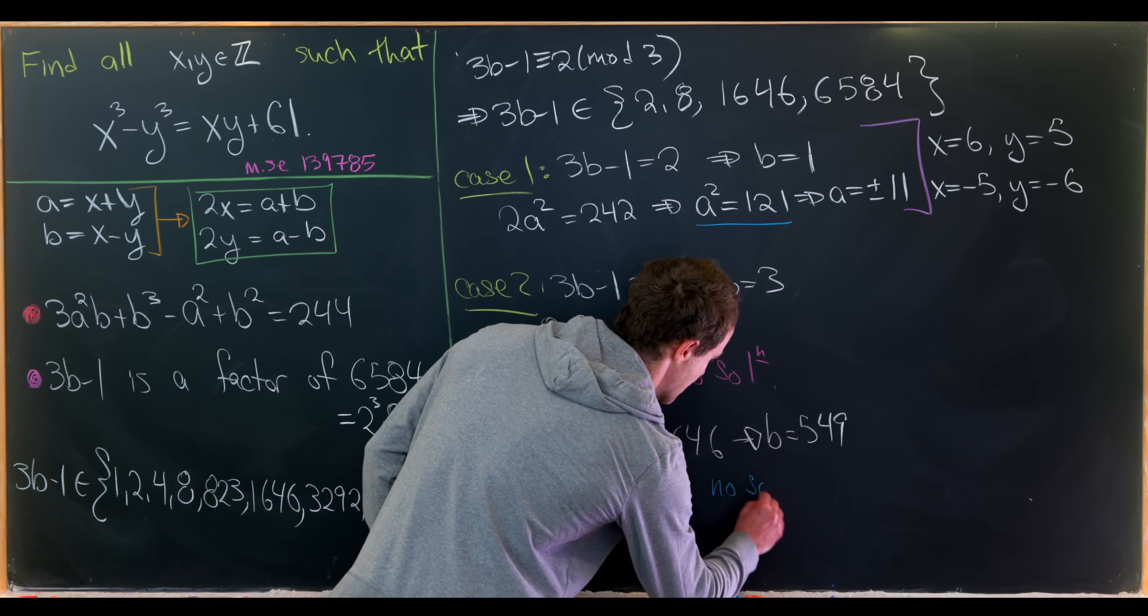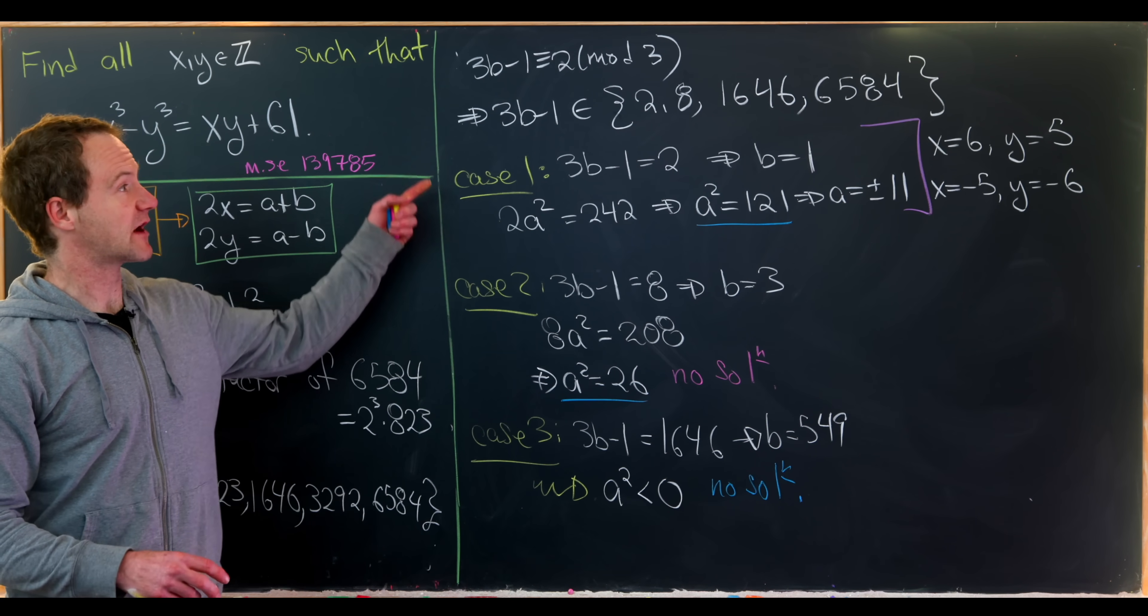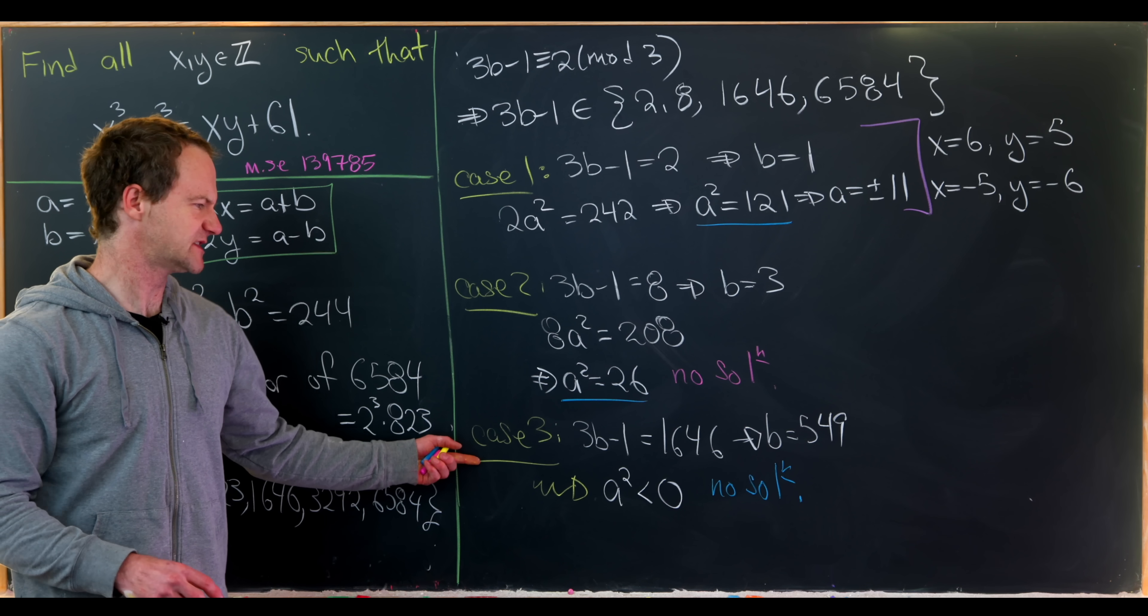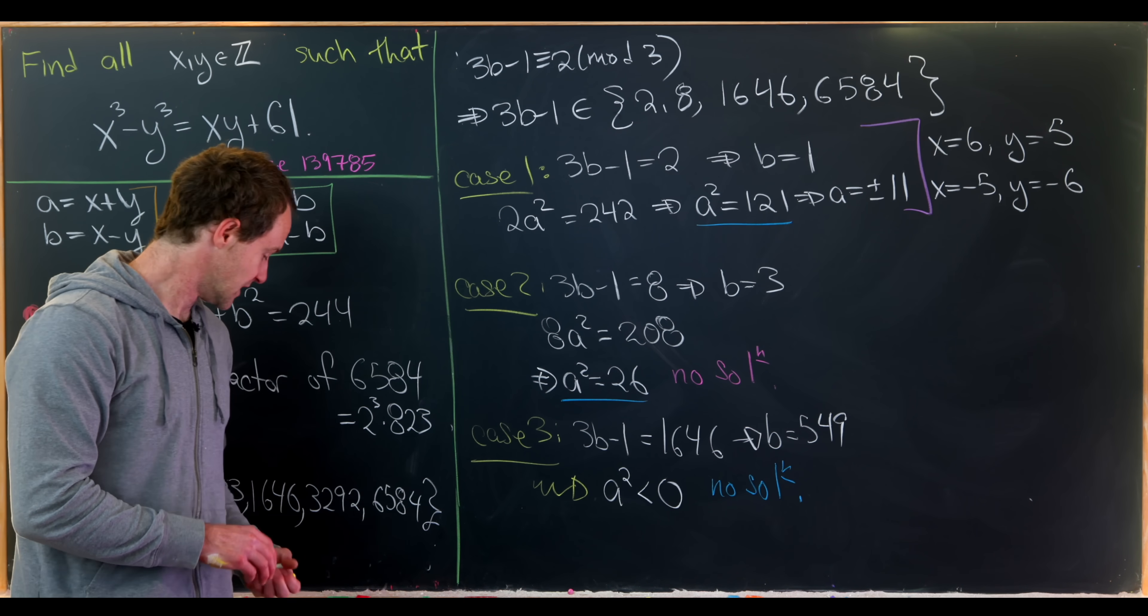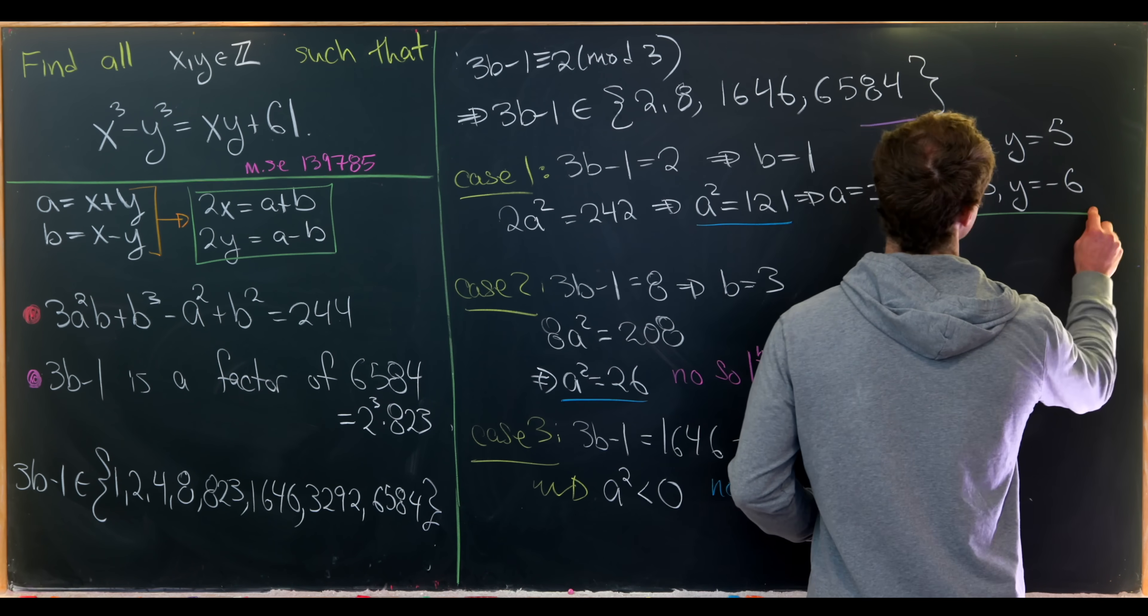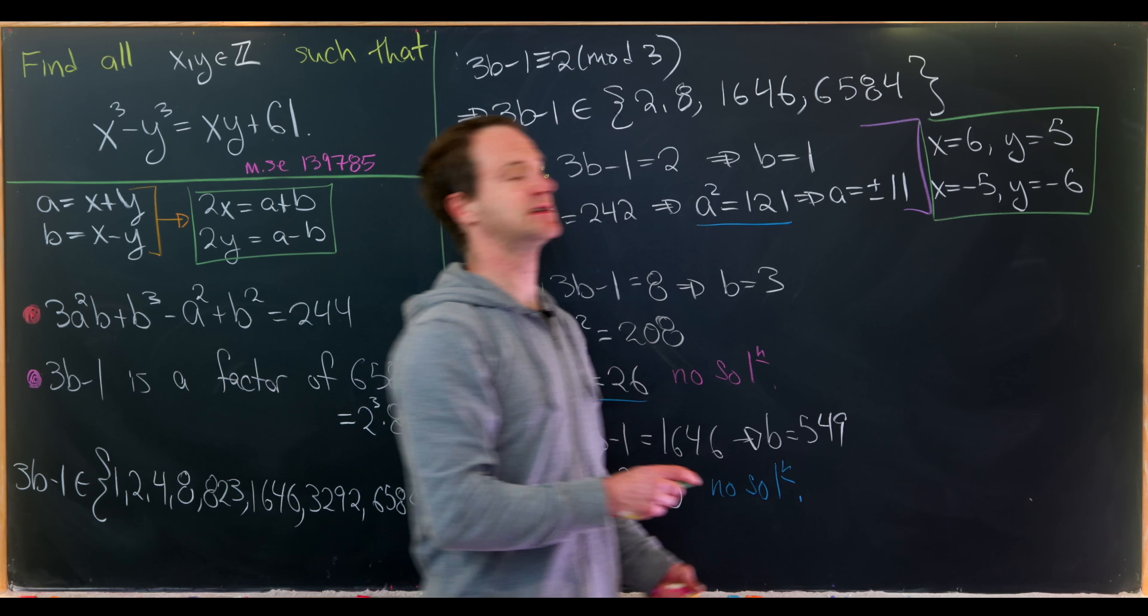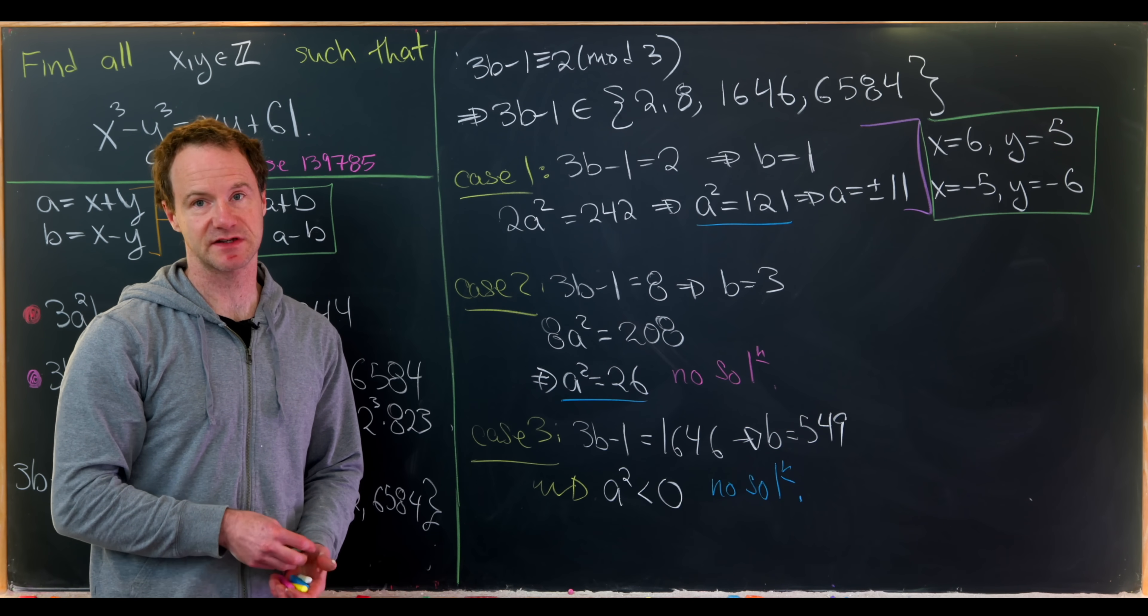So that means we also get no solution here. In fact you can work out the fourth case and see for the same reason as this third case there's also no solution. So that means in the end we only have these two solutions. x is 6, y is 5, and x is negative 5 and y is negative 6.